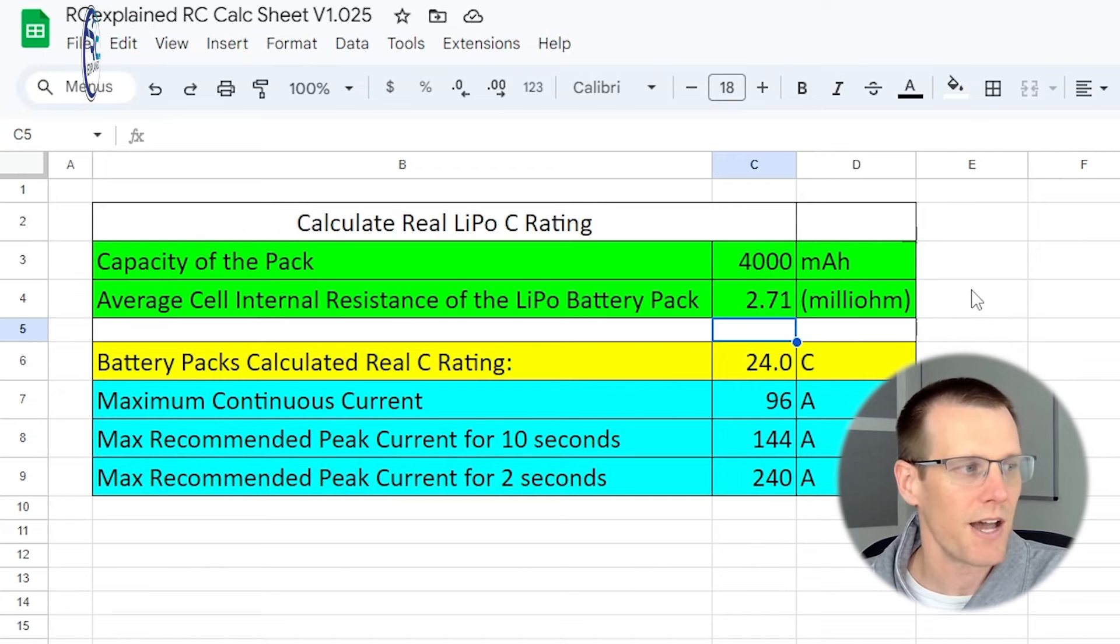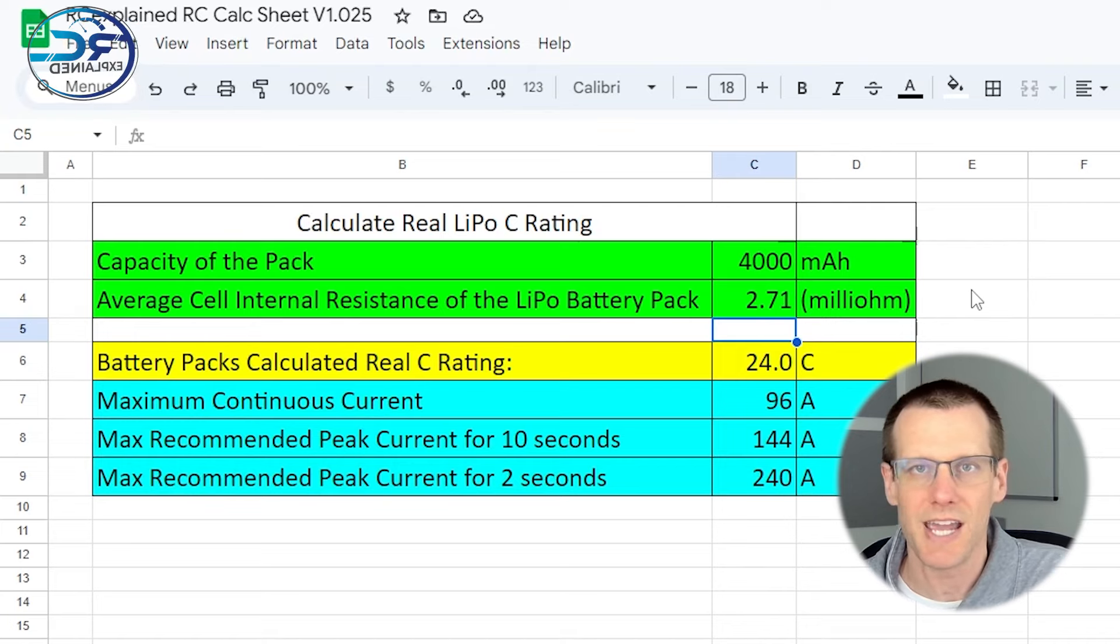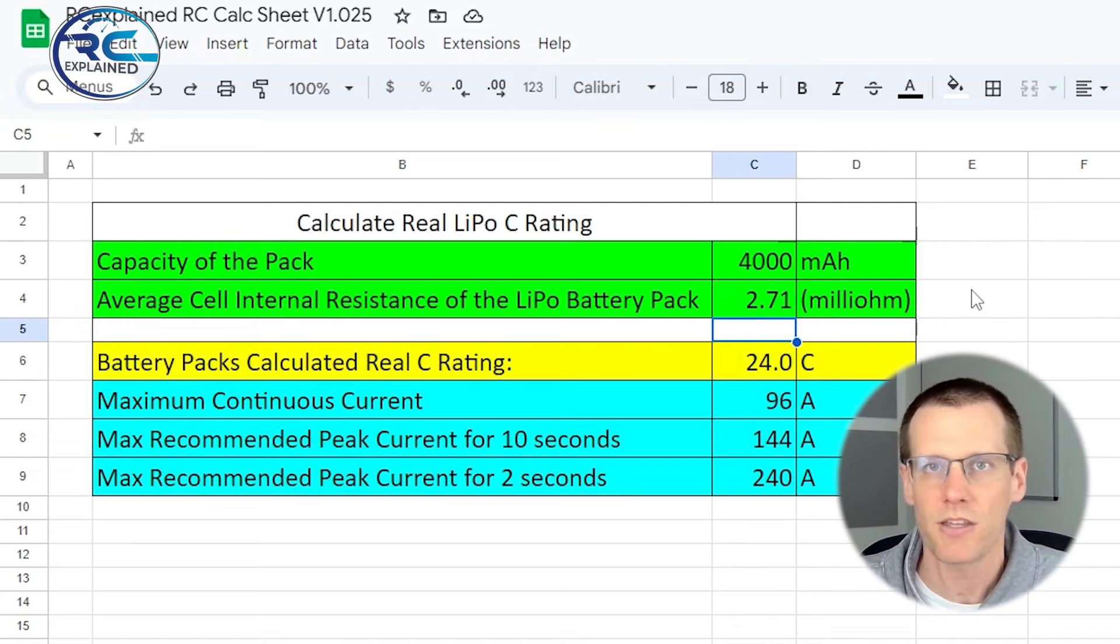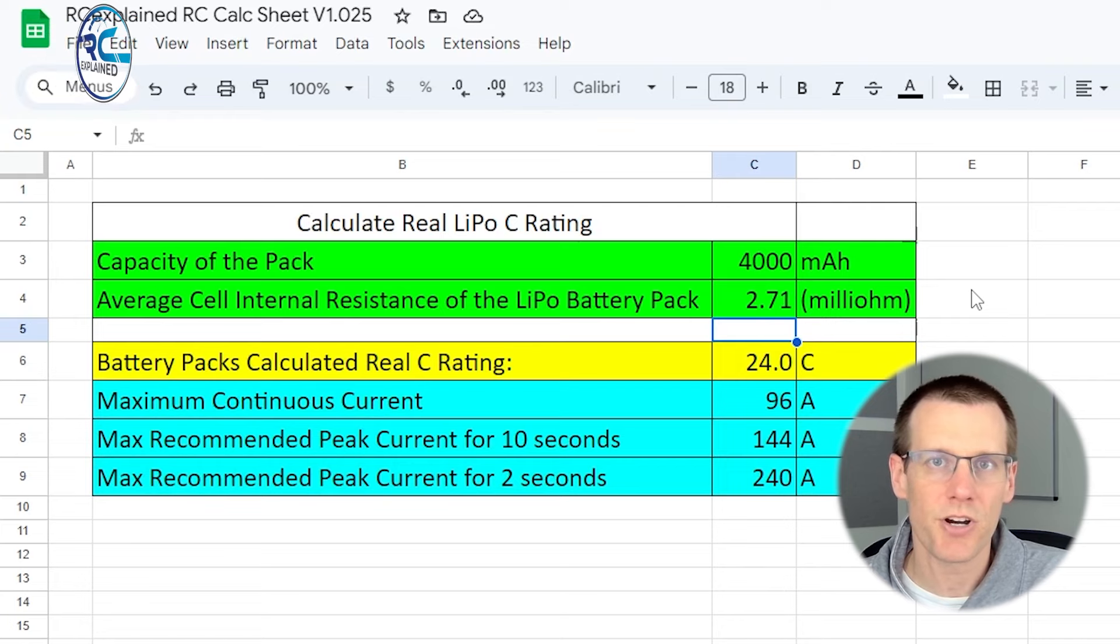So the battery packs calculated real C rating now is displayed and it comes out at 24C, which gives us a maximum continuous current of 96 amps. That's simply taking the newly calculated 24C and multiplying it by four. Even at the 96 amp continuous discharge rate that this calculator is calculating, I don't believe that's conservative enough. If we did 96 amps, I think the battery pack would still overheat.